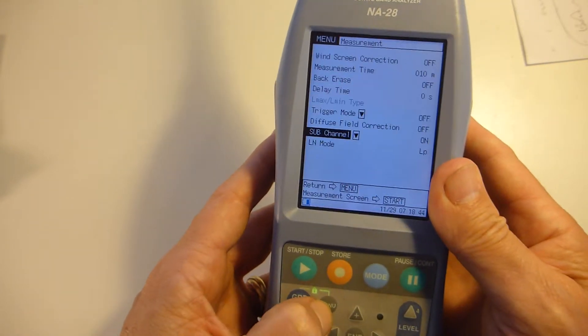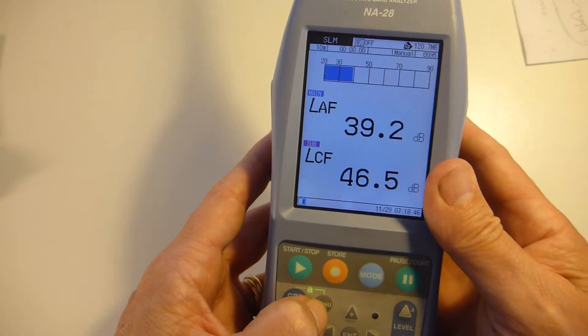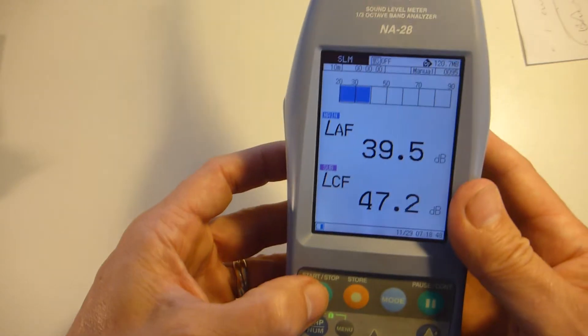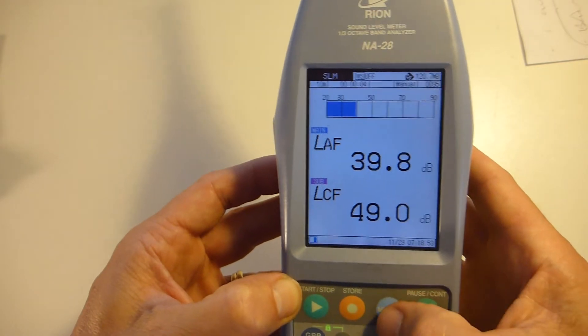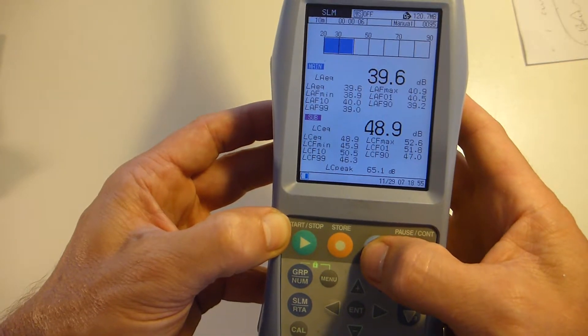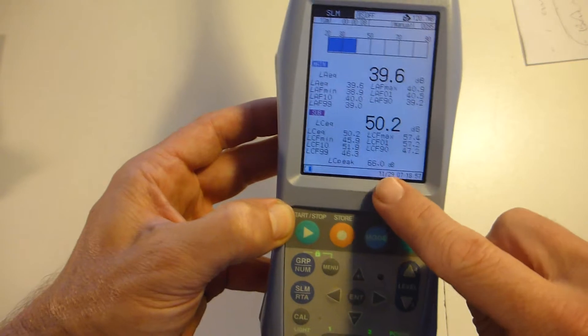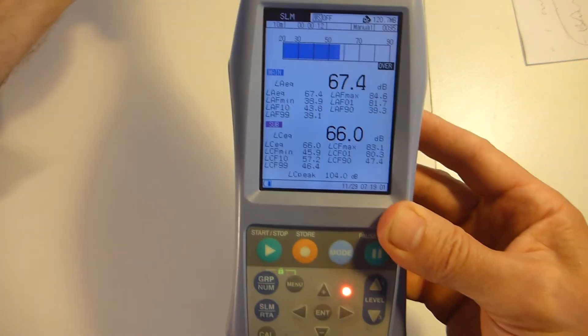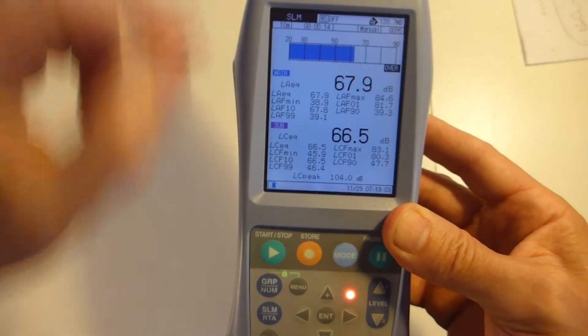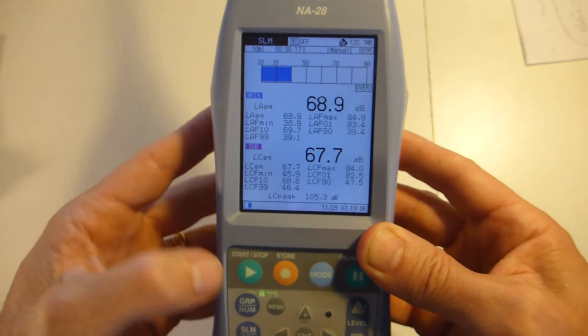So what you then need to do is jump out of menu, start a session by pressing start stop. It will start to measure, and then once you go through the modes, you'll see in the bottom there, here we go, LC peak indicator there. And of course, what we're looking for in Australia is any exceedances above 140 dBC peak. So stop that.